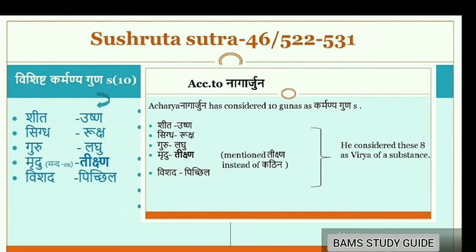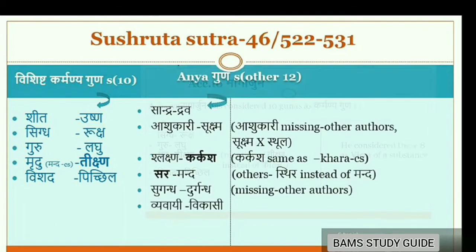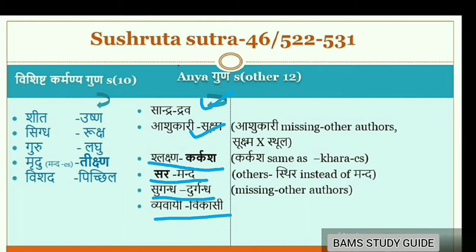The other 12 Gunas according to Sushruta are: Drava, Sandhra, Ashukari, Sukshma, Slakshna, Karakasha, Sara, Mandha, Sugandha, Durgandha, Vyavai and Vikasi.